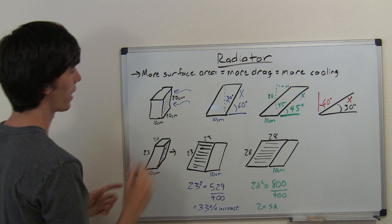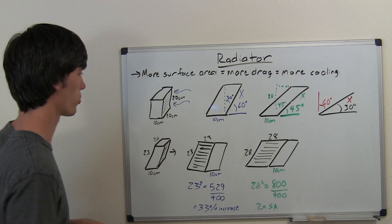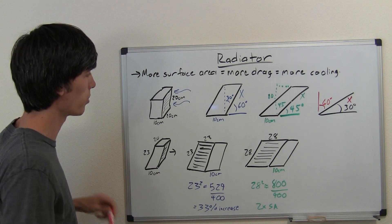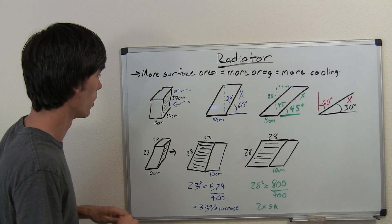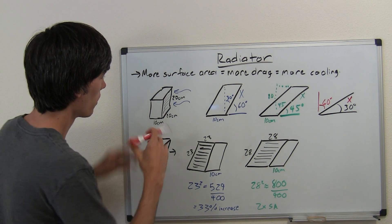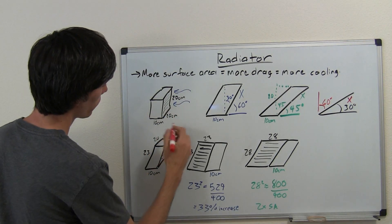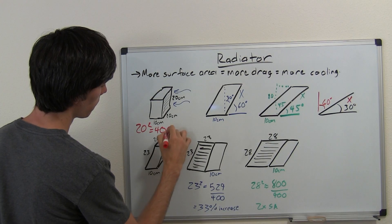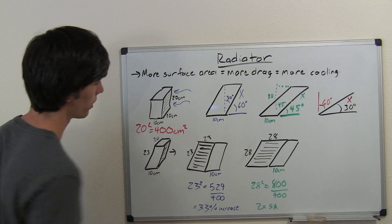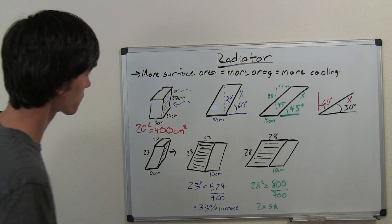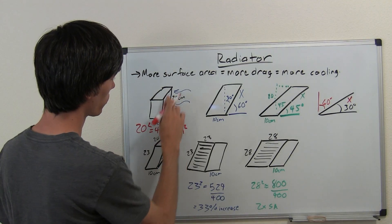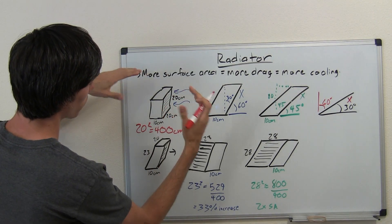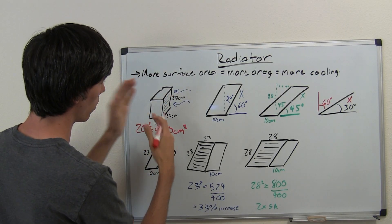So here we have a radiator. It's 20 cm by 20 cm by 10 cm. And let's just say it's in the side pod of a Formula 1 car. So you've got a frontal surface area there of 20 cm squared, so 400 cm squared, right? Very simple. Now, how can you increase the surface area of that radiator without increasing the frontal surface area of the car?